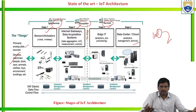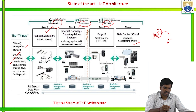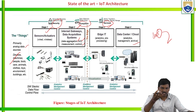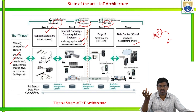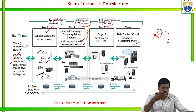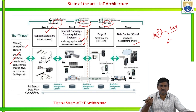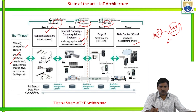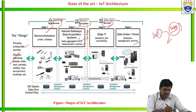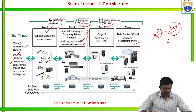Next, gateways are the data acquisition system. The main function of stage two — internet gateways and data acquisition systems — is data aggregation, analog-to-digital conversion, measurement, and control. We cannot use the whole raw data; we extract only useful information through data aggregation. That analog data is then converted using an analog-to-digital converter. Measurement refers to how much data you need — for example, only 12 GB of data. Control allows you to manage all activities within the device.